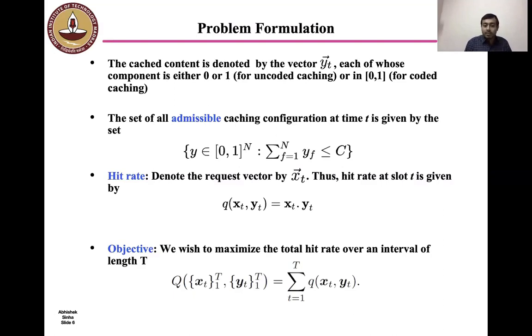Our objective is to maximize the total hit rate over a given interval of length T. So q(xt, yt), the sequence of xt and the sequence of yt, represents the total reward over the time T and it decomposes as the sum of the rewards obtained per slot: sum of q(xt, yt) over t equal to 1 to T.